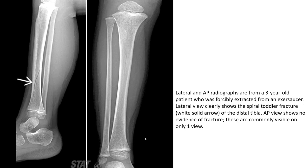Another example on the lateral radiograph in the same patient shows the mild displacement and overall extent of the spiral fracture of the distal tibia. A third example shows lateral and AP radiographs from a 3-year-old patient possibly extracted from a saucer-type accident. The lateral view clearly shows the spiral toddler fracture, as the solid arrow indicates, of the distal tibia.